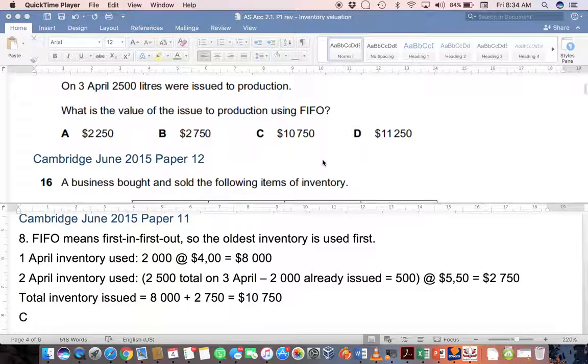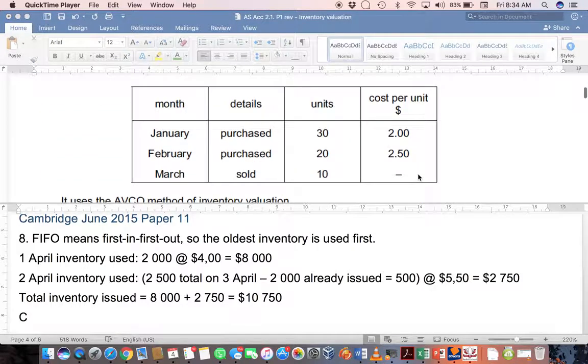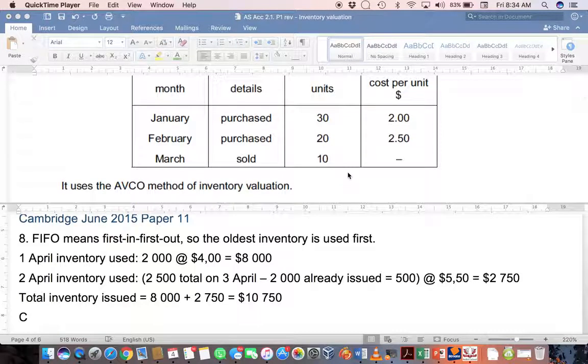Let's look now at paper 12 question 16. A business bought and sold the following items of inventory. You are given the months January, February, March. In January there were 30 units purchased at $2 each. In February 20 units purchased at $2.50, and in March 10 units were sold. It uses the AVCO method of inventory valuation.